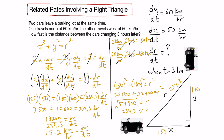So the distance between the cars is changing at a rate of 75.2 kilometers per hour, three hours after they both leave the parking lot. The answer is positive because the distance is increasing over time.